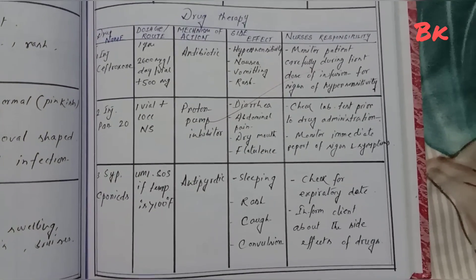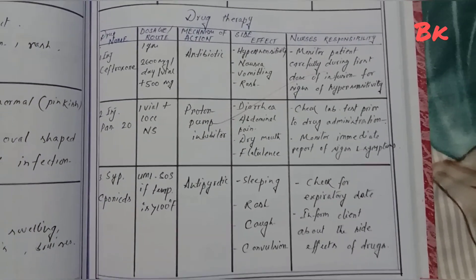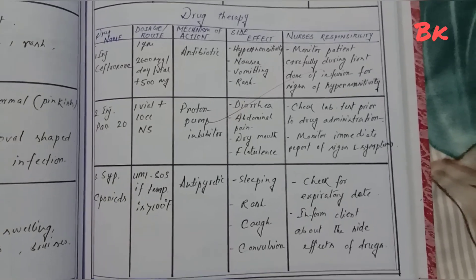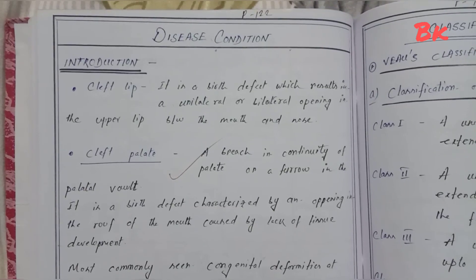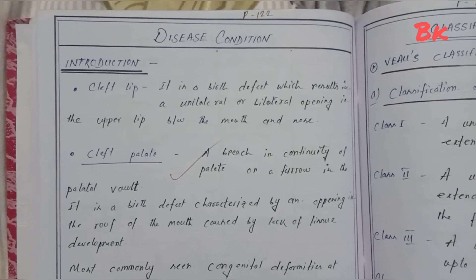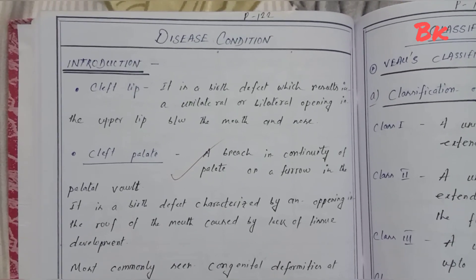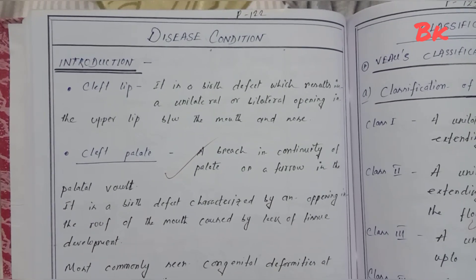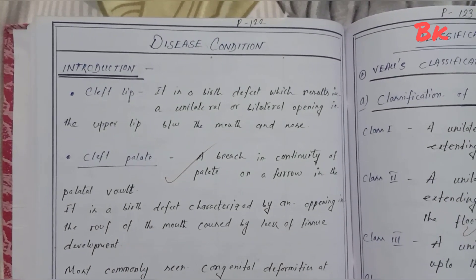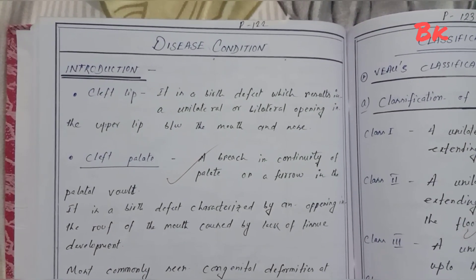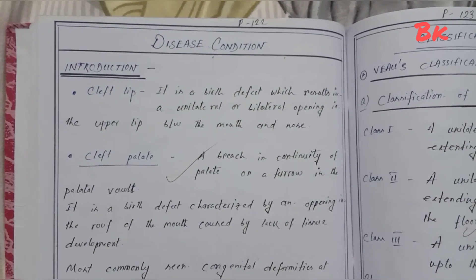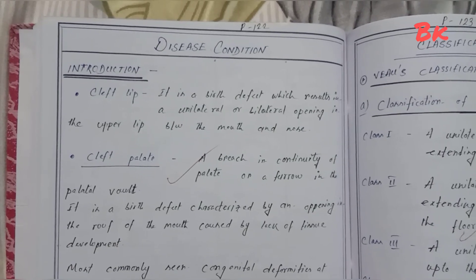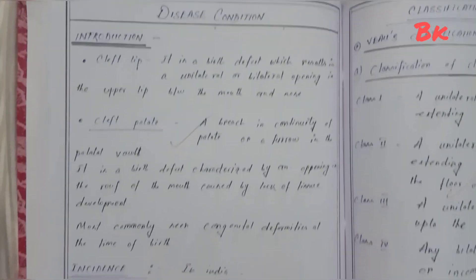Investigations and drug therapy or medications are documented. Regarding the disease condition: if you are writing a care study or case study, you need to write this section. If you are just writing a care plan, you do not need to write this — you can skip it.